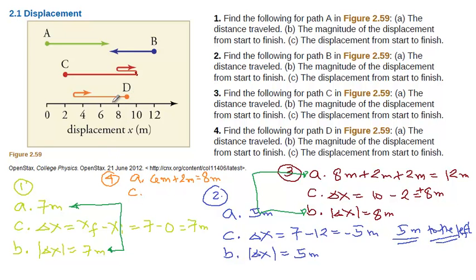For question C, displacement, final position, that is just at 5 minus initial position at 9. So, displacement will just be negative 4 meters, meaning it's like 4 meters to the left. There's a negative.